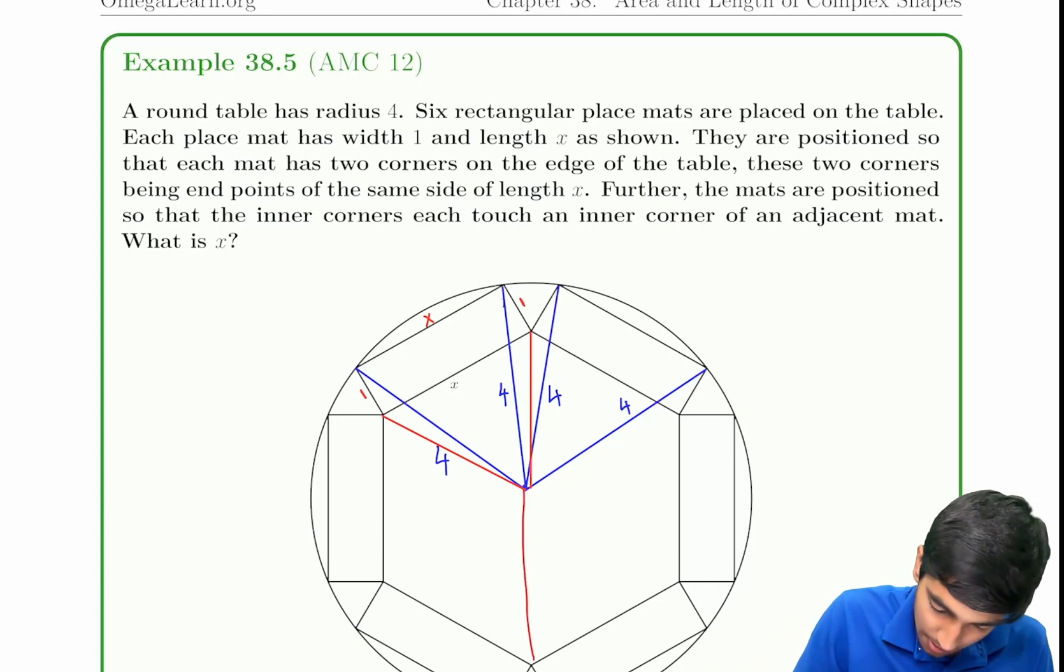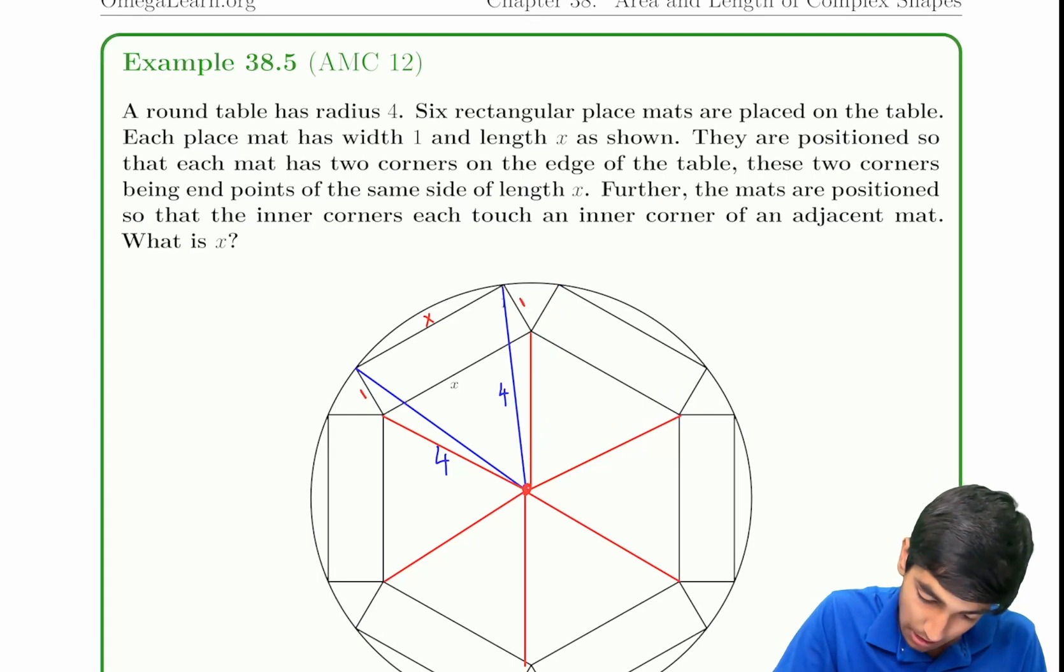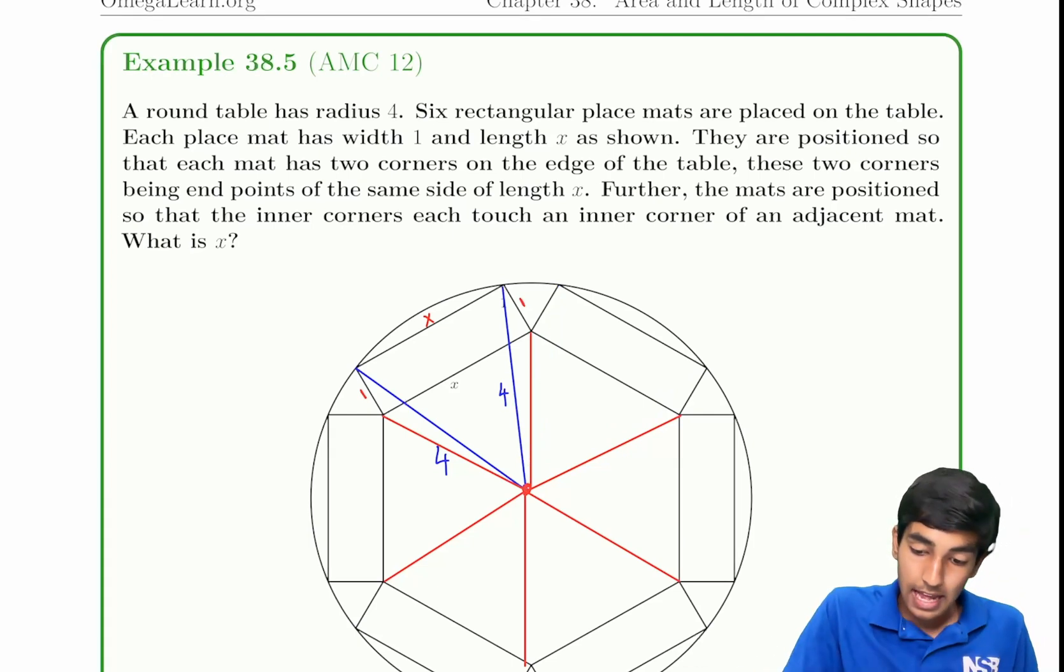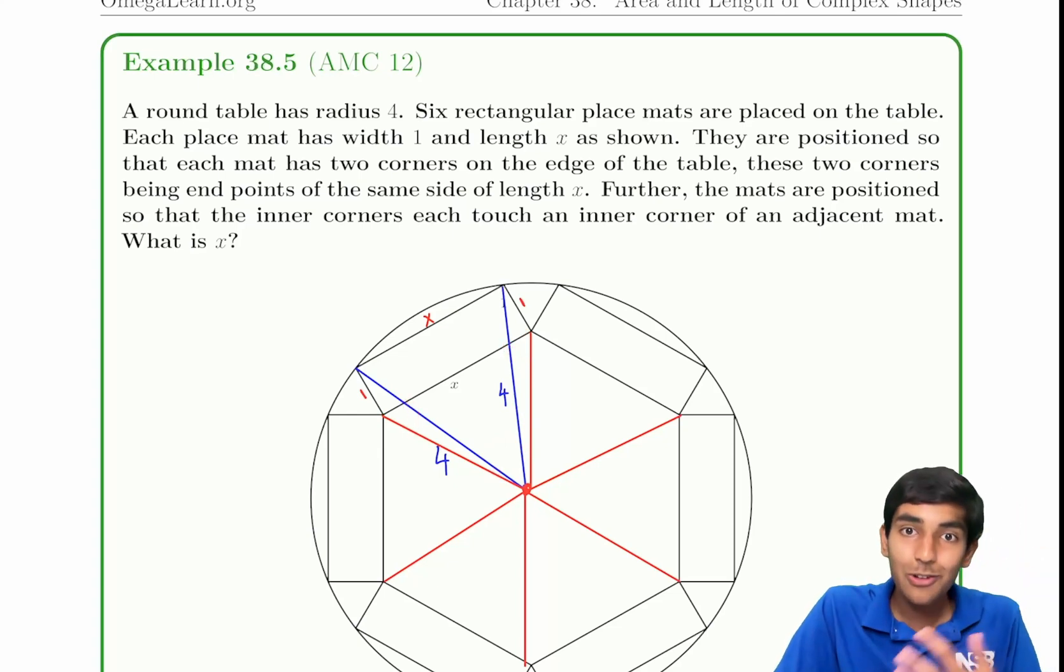They partition the circle into six different regions. The total sum of all those angles is 360. So one of those angles must be 60. But then 4 and 4 are equal, so this is 60 degrees and these two angles are equal.